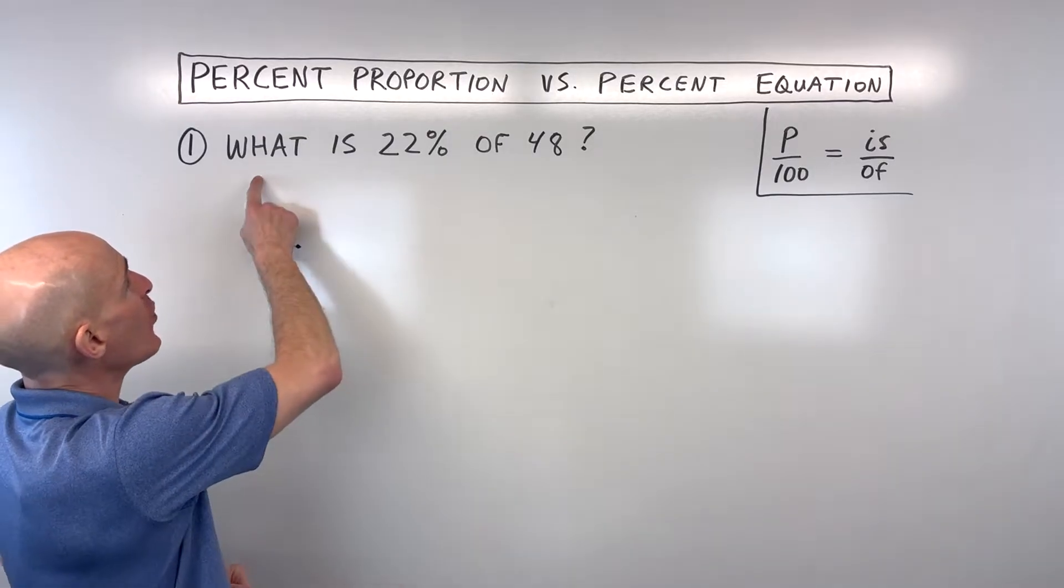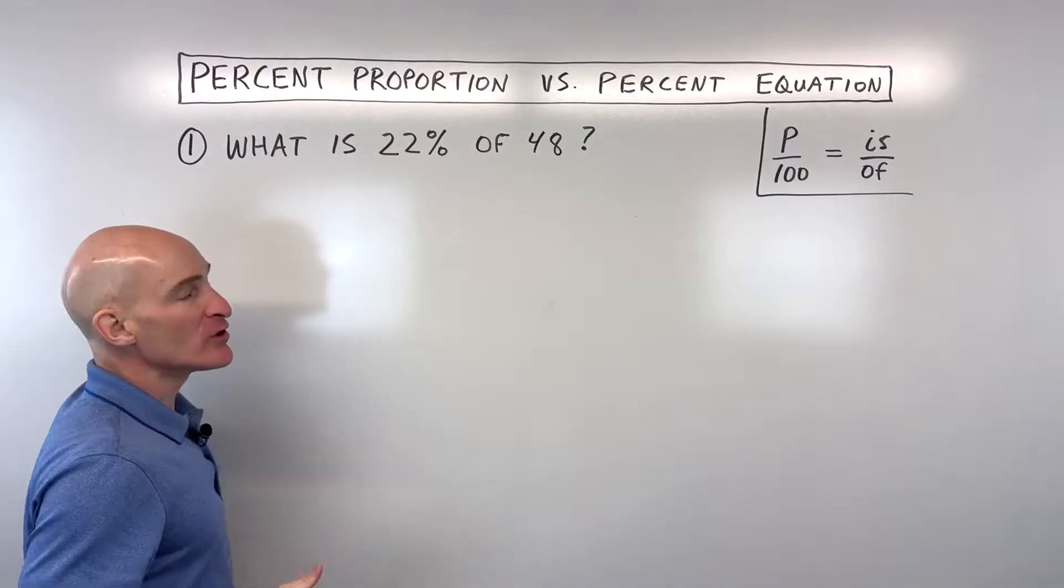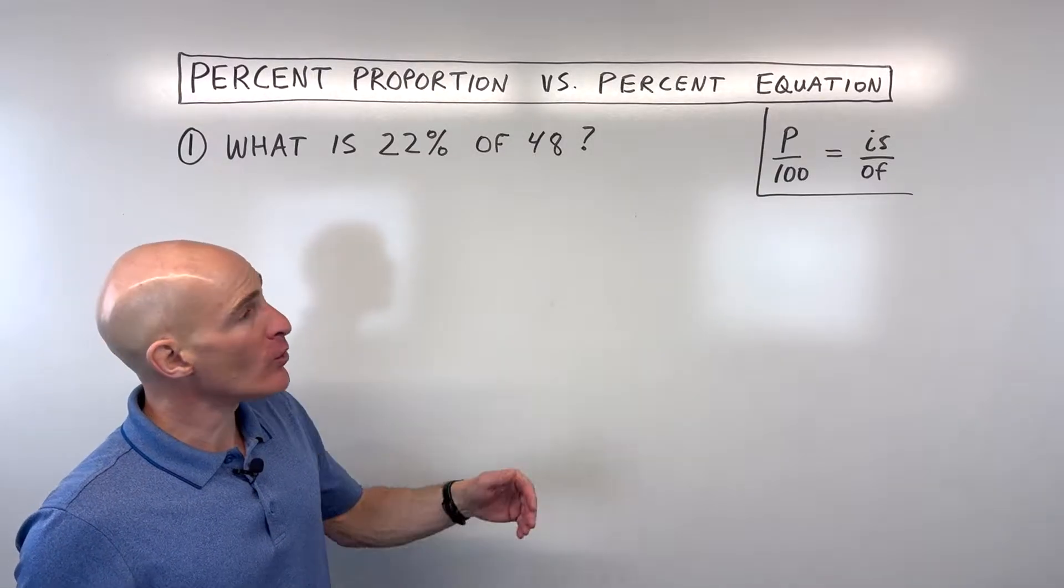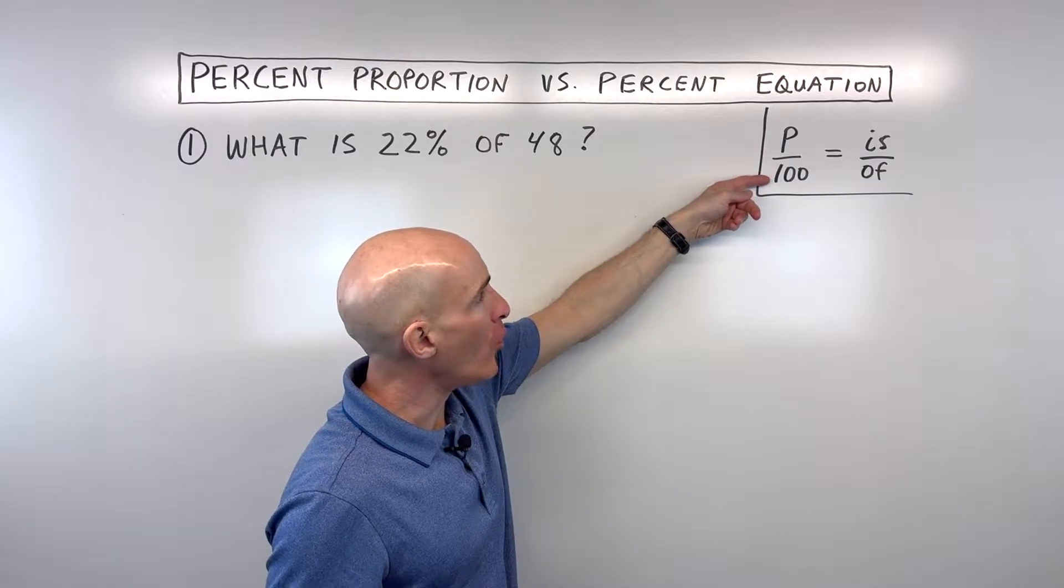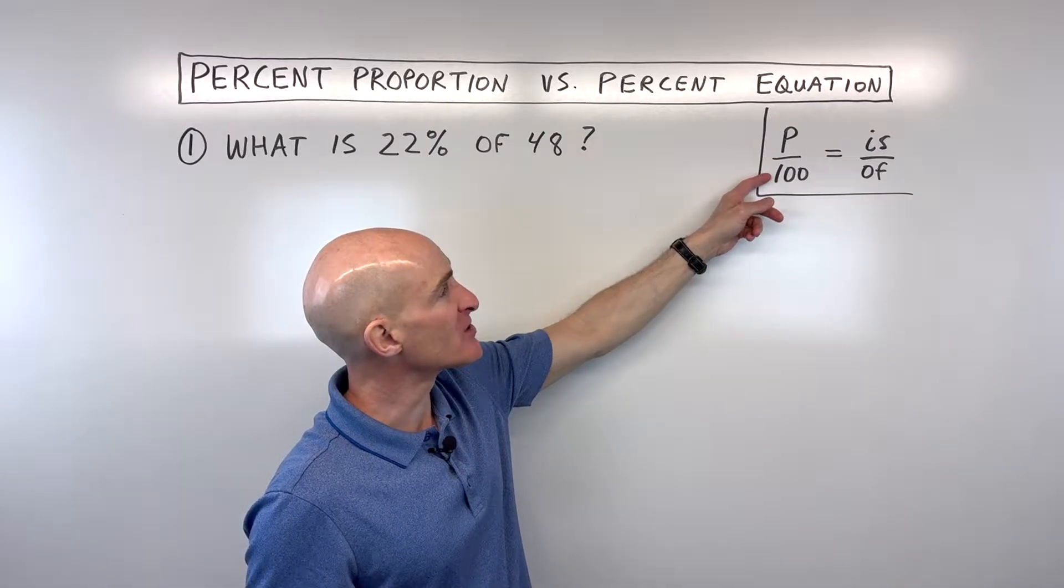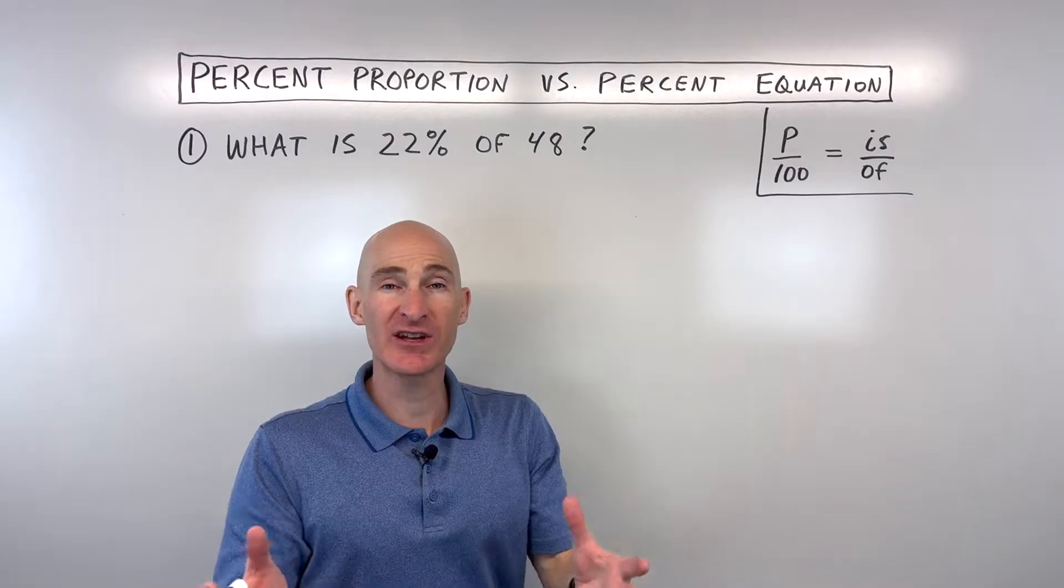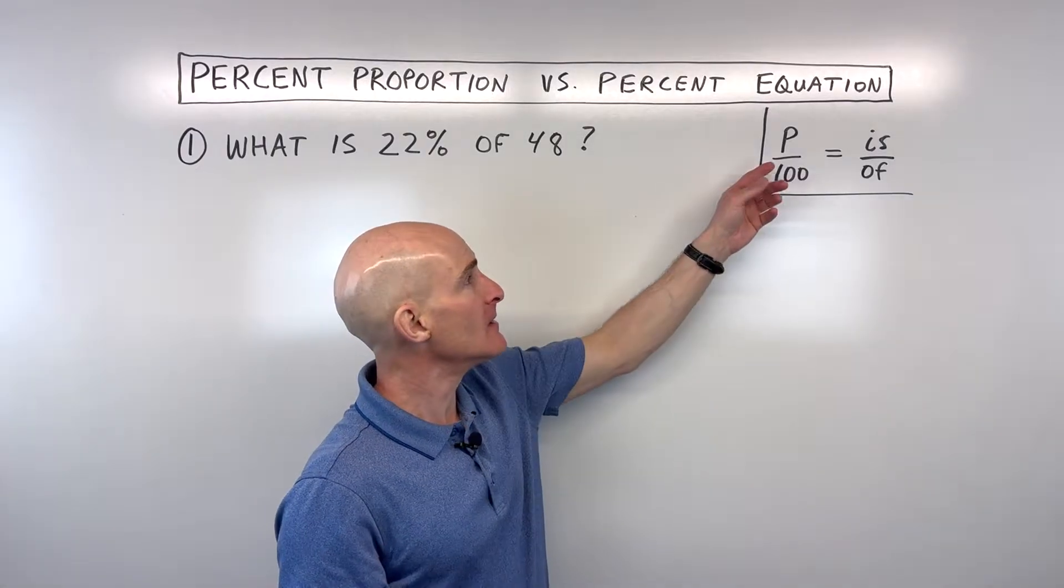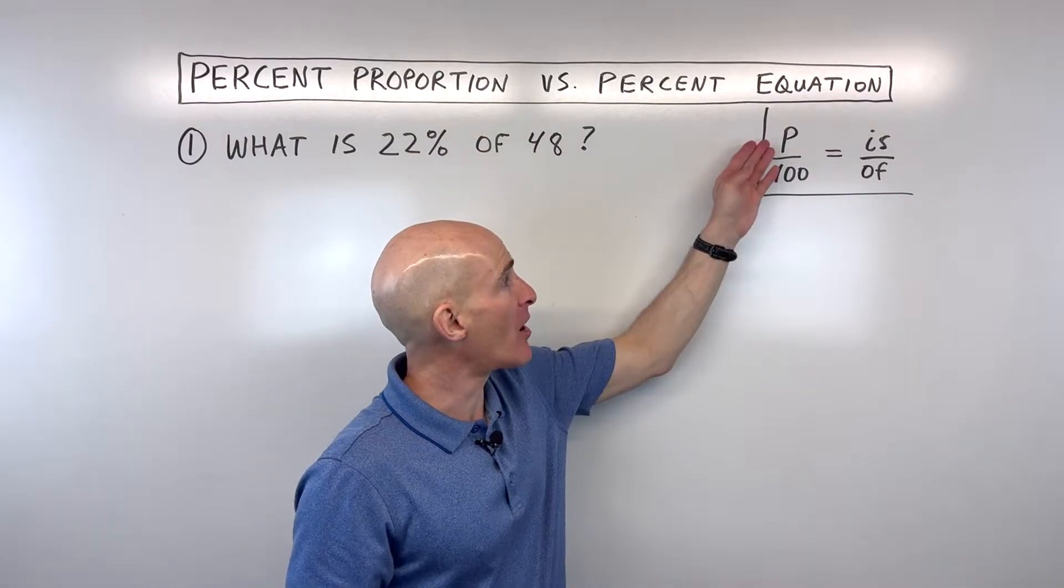The first example says, what is 22% of 48? When we do the percent proportion, we're comparing the part over the whole equals the part over the whole. What does that mean? When you think of a percentage, 100% means the whole thing. If somebody says I'm going to give you 100% of this pizza, that's the whole pizza. But the percent is the part out of 100, the part out of the whole.